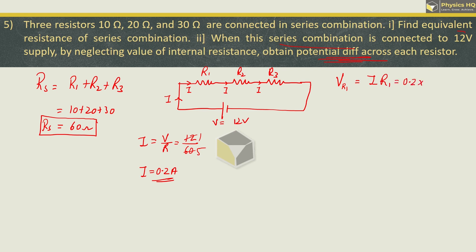So potential difference across resistor R1, voltage ka formula is I into R1. I is 0.2 and R1 is 10, so this is 2 volt. Similarly potential difference across R2 is current through R2 into resistance of R2, current is 0.2 resistance is 20, so this is 4 volt. Similarly for the third one, I into R3 is 0.2 into 30 which is 6 volt. So we got all three potentials. Hope you all understood this.